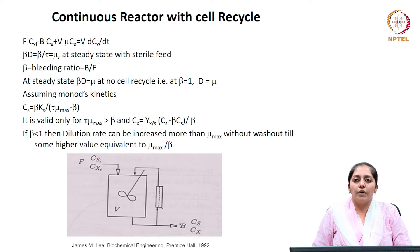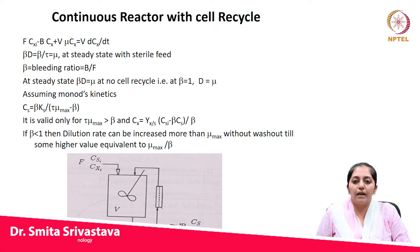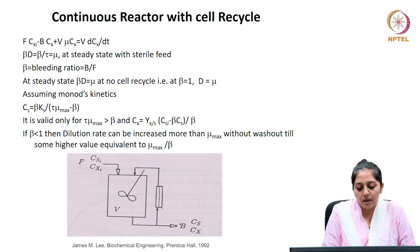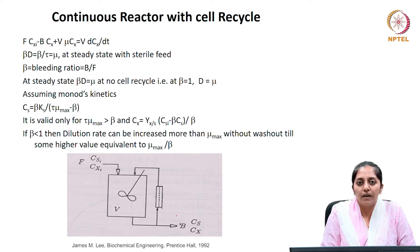In another setup of continuous recycle — a continuous reactor with cell recycle — you can see the schematic on the screen for a continuous reactor running at steady state with a recycle stream. Here, the cell separator device is after the bleeding stream. The bleeding stream is the stream of the recycle which is being let out, in order to find a condition so that we can still run the system at steady state.